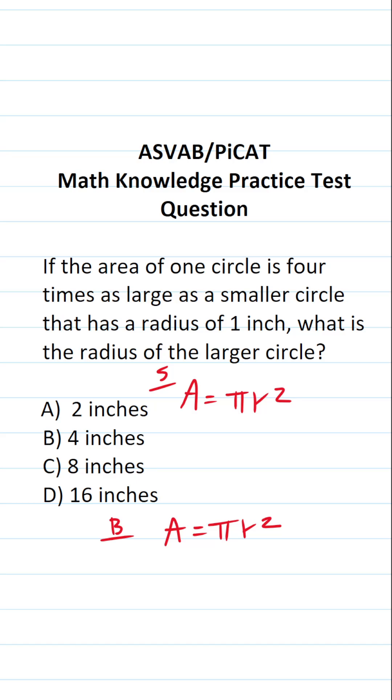Of course, the formula to calculate the area of a circle is π r². All right, so let's start with the smaller circle.